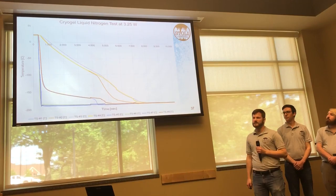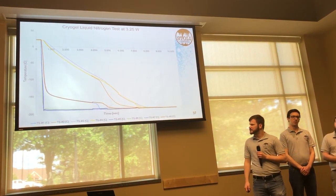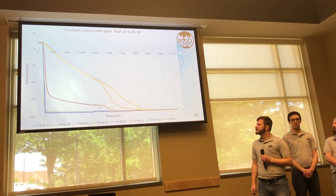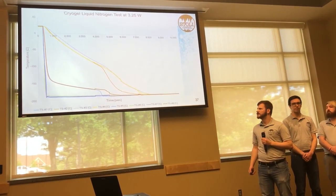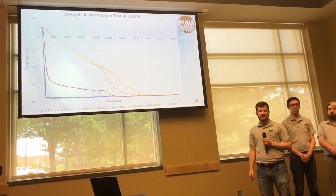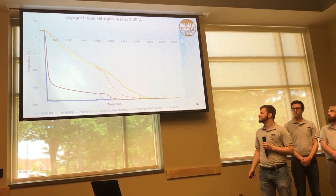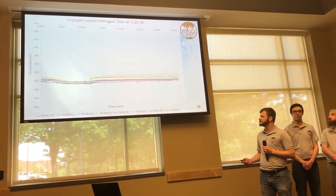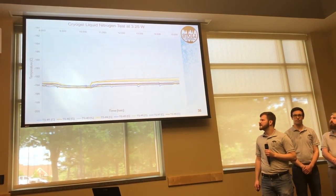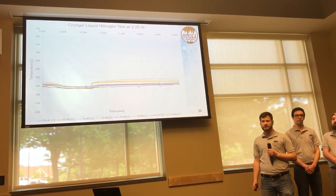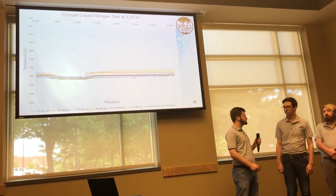For our liquid nitrogen test, between about 3,000 and 5,000 seconds we had an anomaly. We deduced this to be condensation of air in our chamber. We tried to evacuate the chamber using nitrogen gas, but either we were unsuccessful or the nitrogen itself condensed inside, saturating our insulation. When we turned on the heater, we only got a temperature difference of about 1 degree Celsius, because our insulation was saturated with liquid — either oxygen or nitrogen.